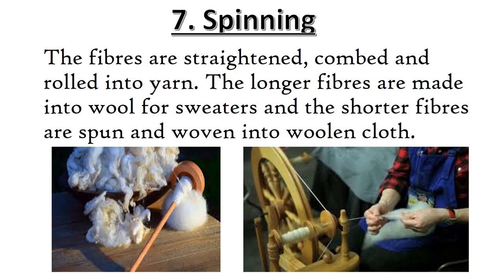Spinning is the seventh step. The fibers are straightened, combed, and rolled into yarn. The longer fibers are made into wool for sweaters, and the shorter fibers are spun and woven into woolen clothes. In this diagram, you can see the two devices used for spinning fiber into yarn. The first device is called the hand spinner or tatli, and the second is the chargha.